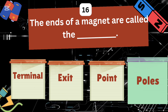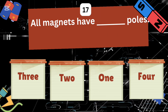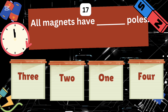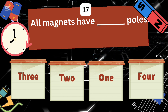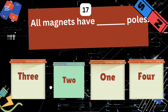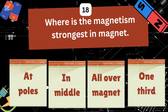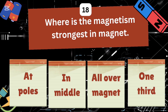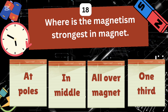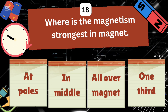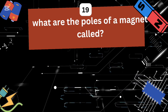The ends of a magnet are called the poles of the magnet. All magnets have two poles. Where is the magnetism strongest in a magnet: at the poles, in the middle, all over the magnet, or one third of the magnet?